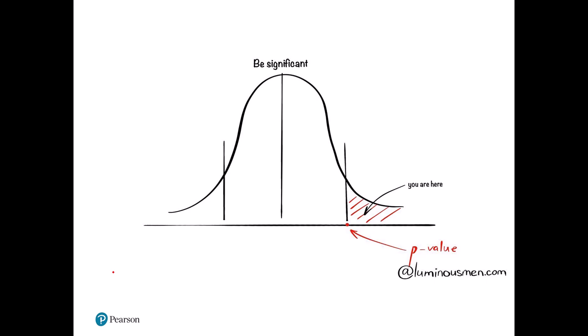Looking at t-tests, you probably remember this. The idea is that we have some kind of normal distribution with a median and midpoint value, a certain range of likely outcomes, and unlikely events at the sides — that's your p-value.